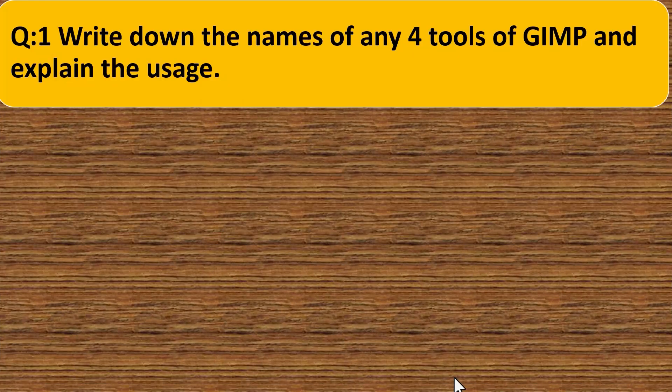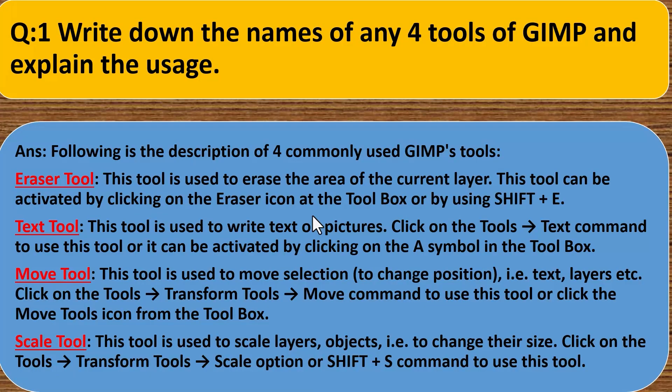Long answer type questions. Question first. Write down the names of any four tools of GIMP and explain their uses. Answer. Following is the description of four commonly used GIMP tools. Eraser tool. This tool is used to erase the area of the current layer. This tool can be activated by clicking on the eraser icon in the toolbox or by pressing Shift plus E.